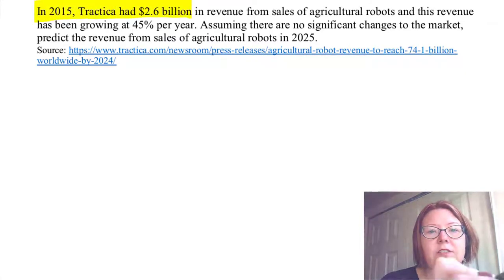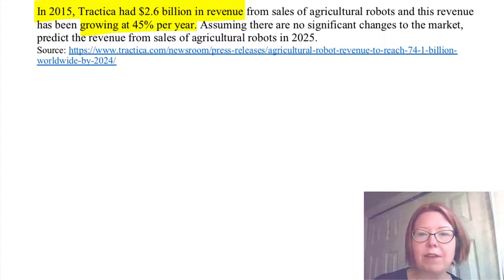There's our initial value in our initial year. We also have a growth rate, 45% per year. And notice we have nothing in here about the model being continuous. So let's use a discrete model and then we'll answer the questions after we have our model built. Let's start by declaring some variables.